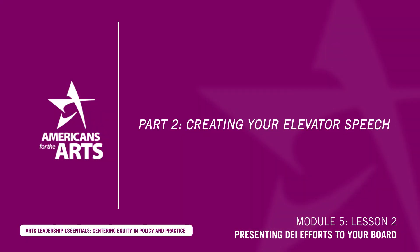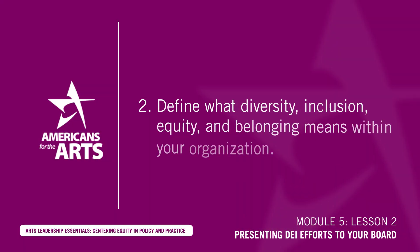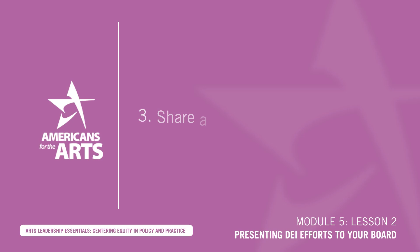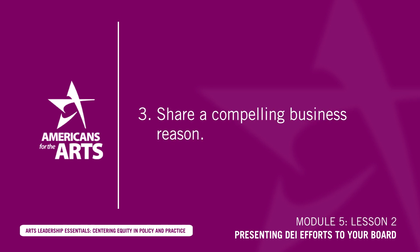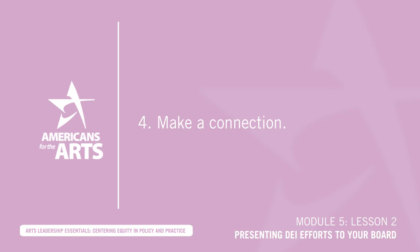Part 2: Creating Your Elevator Speech. Complete the following outline to help you succinctly state why diversity, equity, and inclusion is necessary. 1) Write your name and role in the organization. 2) Define what diversity, inclusion, equity, and belonging means within your organization. 3) Share a compelling business reason why the arts must embrace DEI initiatives within the workforce, workplace, and marketplace. 4) Make a connection between the organization's mission, vision, and values and the DEI initiatives you present. Once complete, this should take under two minutes to say.